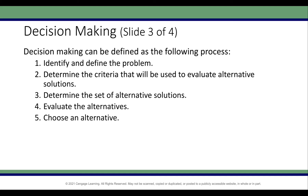Those three are the different types or levels of decisions. How do we make decisions? First, we identify and define a problem. Then we determine the criteria that will be used to evaluate alternative solutions. Once you identify the problem, you need to find different solutions for it, assuming there can be different solutions. In order to identify and evaluate those solutions, you also have to have criteria for them.